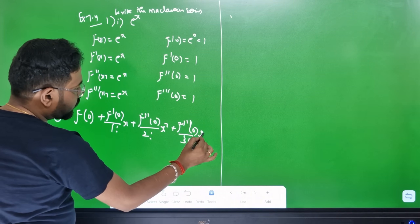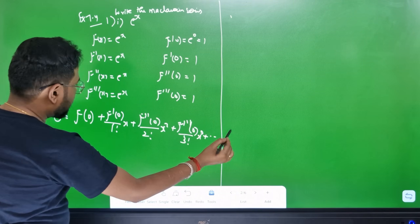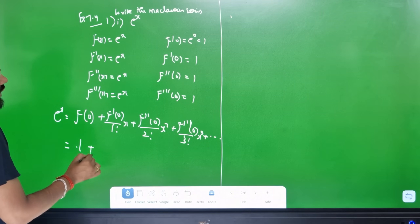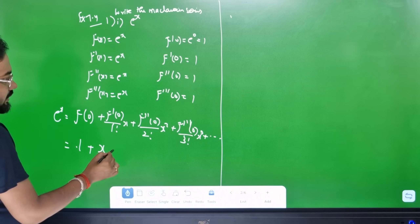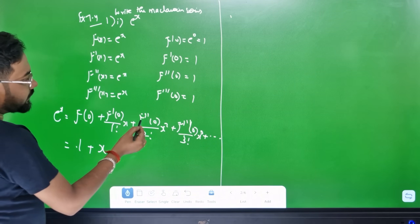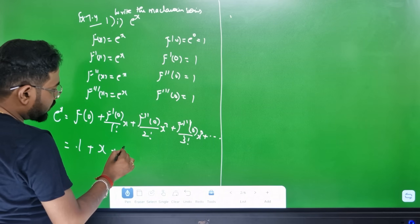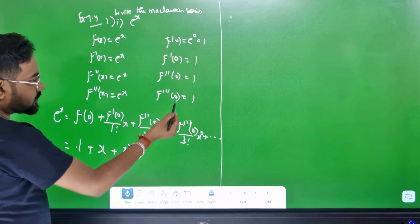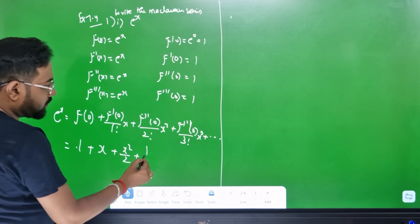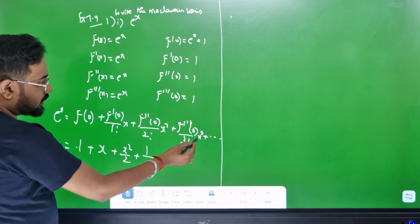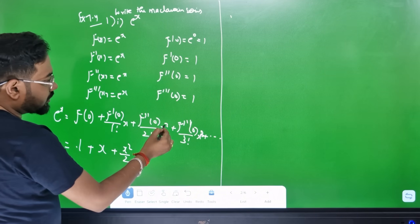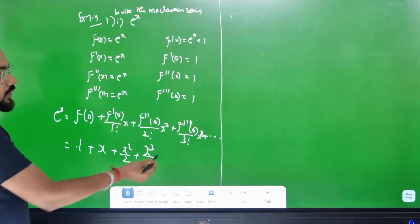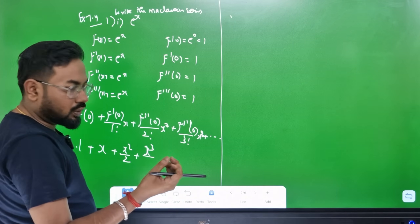Continuing the series: f'(0) is 1 divided by 2 factorial times x squared, plus f''(0) is 1 divided by 3 factorial times x cubed. 3 factorial is 3 into 2 into 1 = 6. So that's the answer.